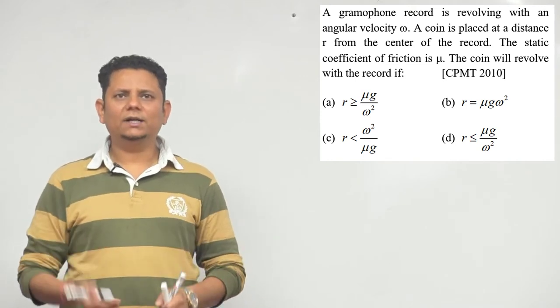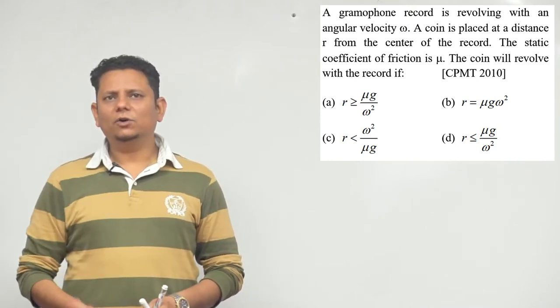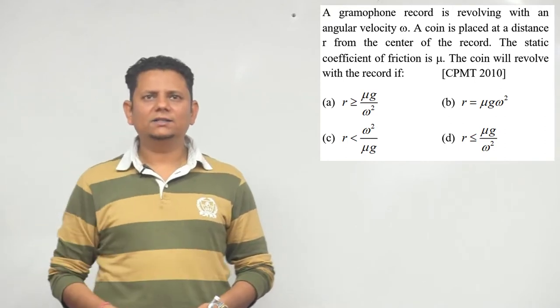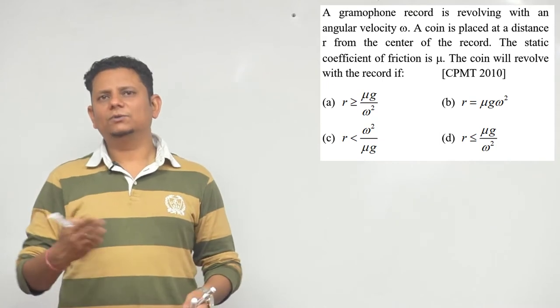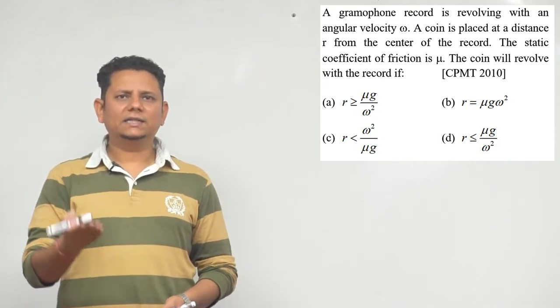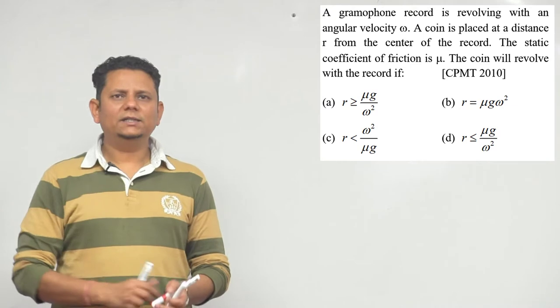The options are: (a) r > μg/ω², (b) r = μgω², (c) r < ω²/μg, (d) r < μg/ω².